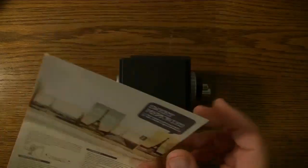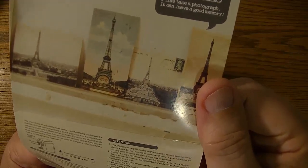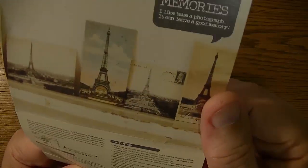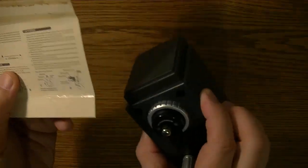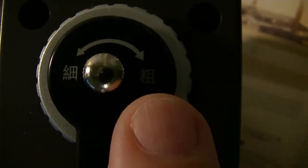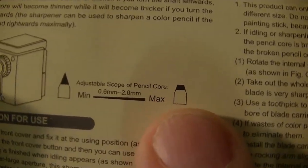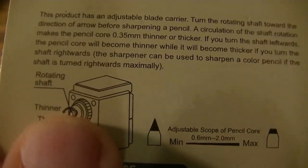This is the card that came with this and it has some instructions here. I'm thinking I don't really need to read this except it talks about this adjustment here which you see is in Chinese. I can tell you what this does because it's kind of explained right there. It gives you either a blunt or a point.